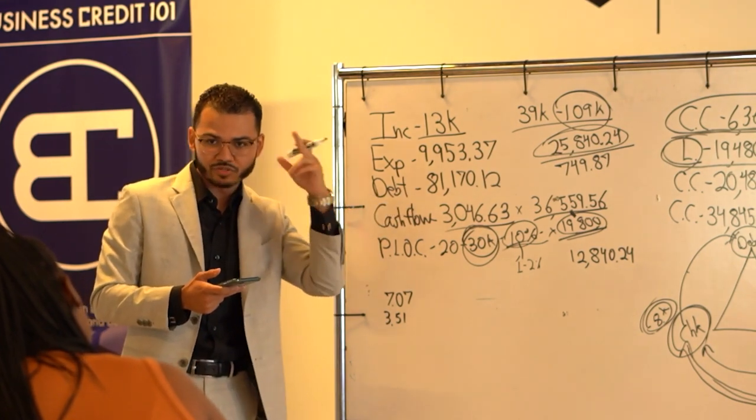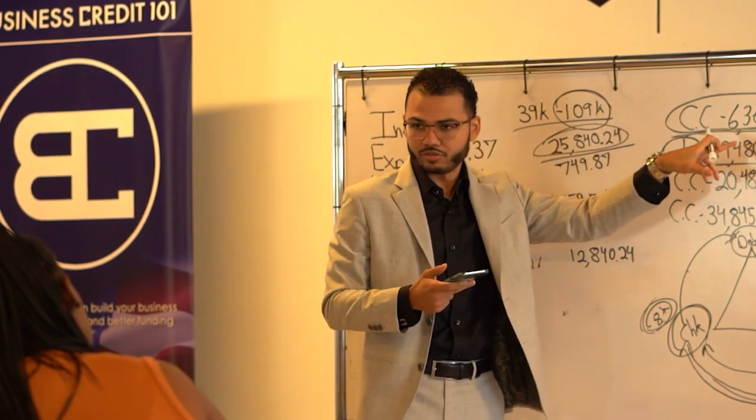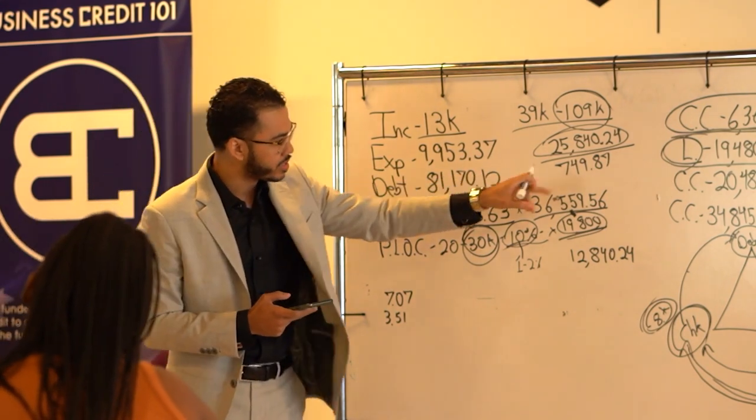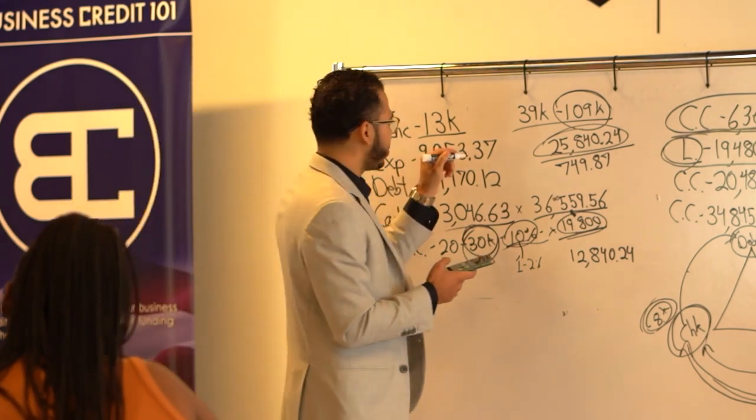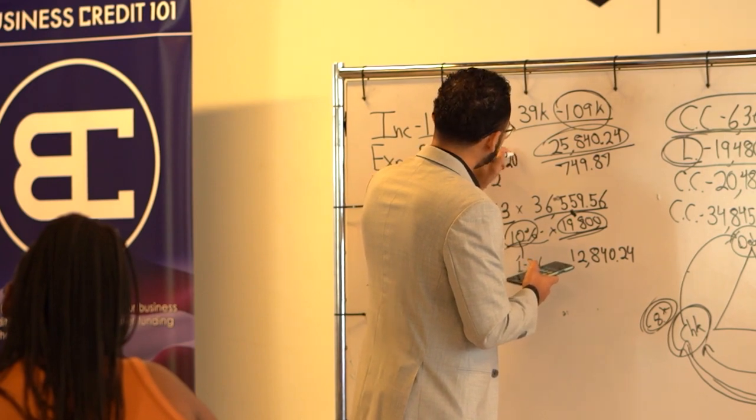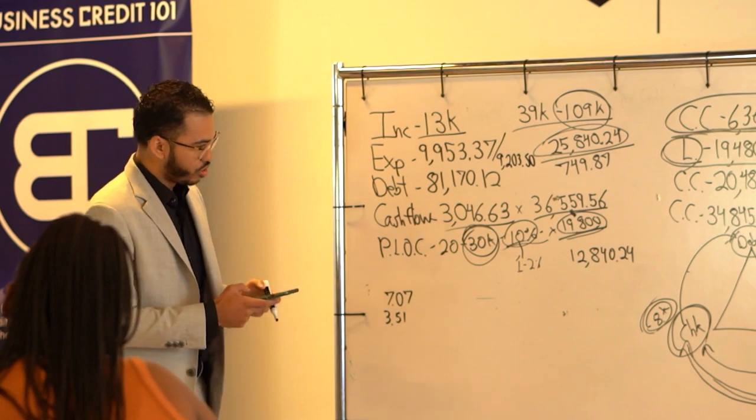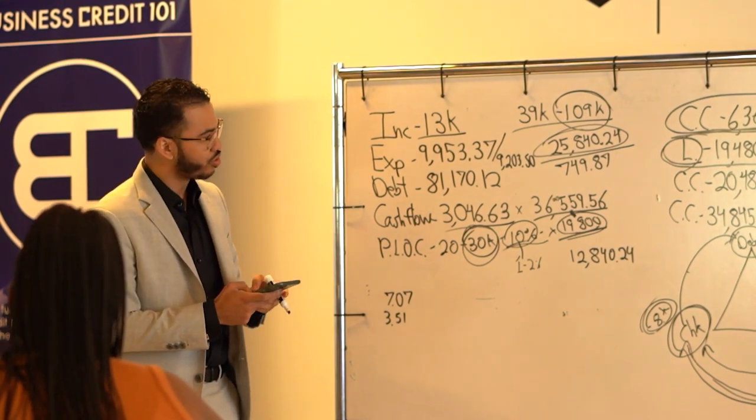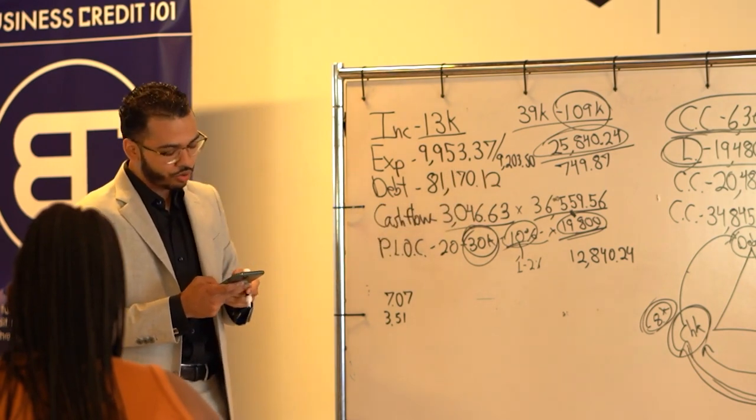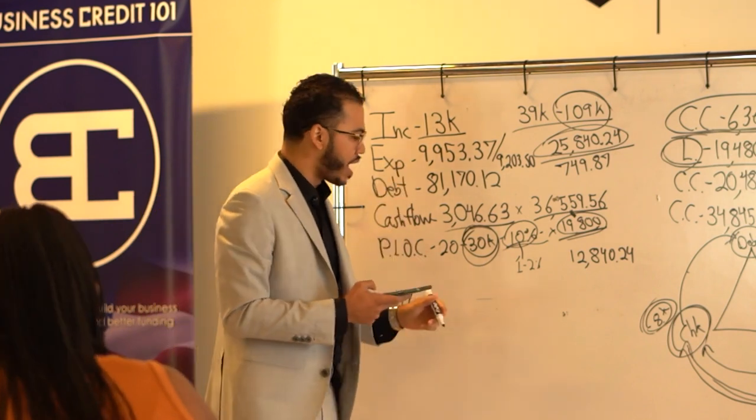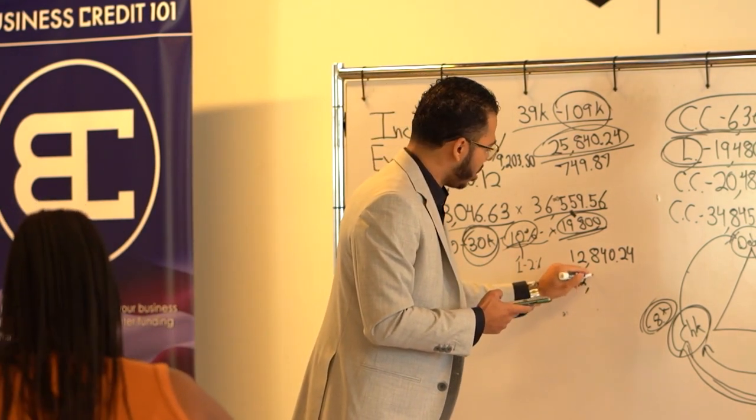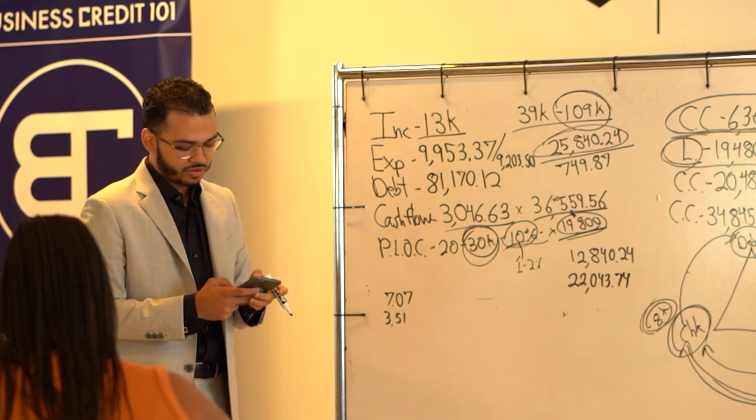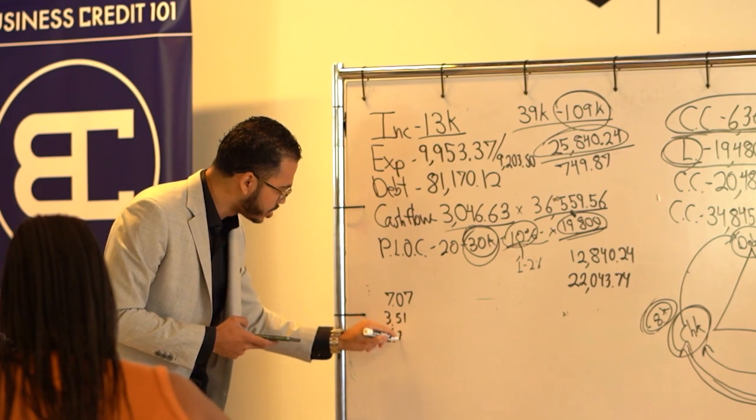Because those two expenses are now gone. That's no longer an expense. This is the beauty of velocity here, is I remove the bill. It's no longer there, right? So take $9,953.37 minus $749.87. My new expense number is $9,203.50. So we take $12,840.24 plus $9,203, because over 30 days, $9,203.50 should come out of the line of credit. Bringing the balance back up to $22,043.74. Take that number, times it by 10%. Divide by 365. You're at $6.03.